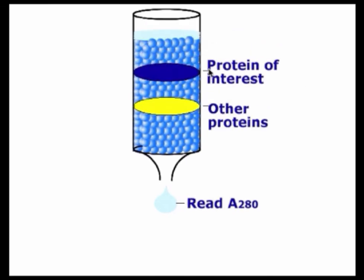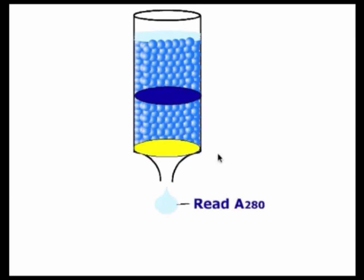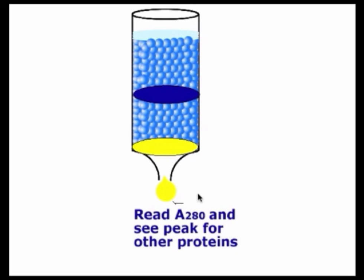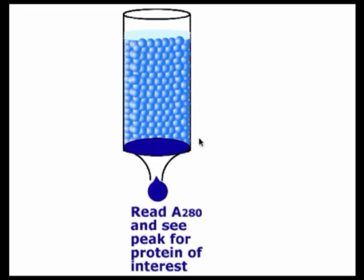Seeing the protein of interest in blue moving through the column, other proteins moving faster, those other proteins are going to elute first. We'll read the A280 of those other proteins, until finally the protein of interest is going to elute much later, and we'll read the A280 and see the peak for the protein of interest.